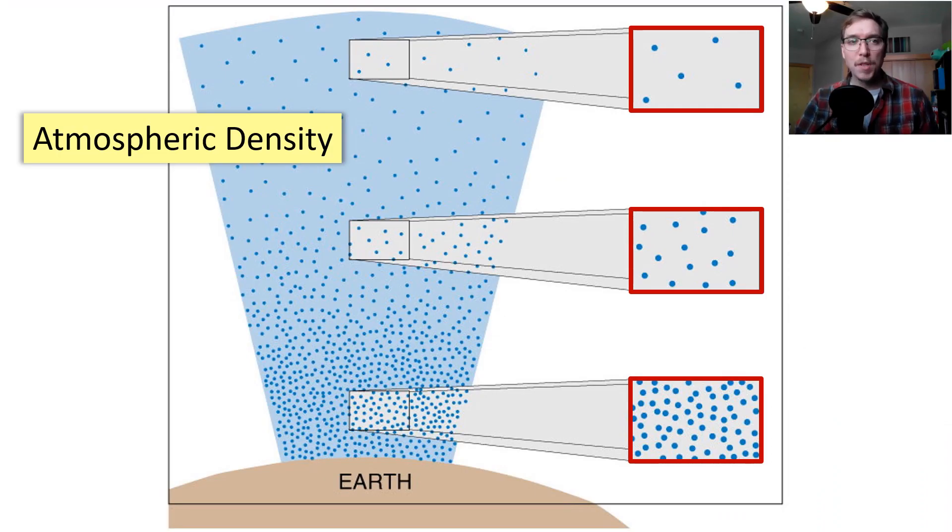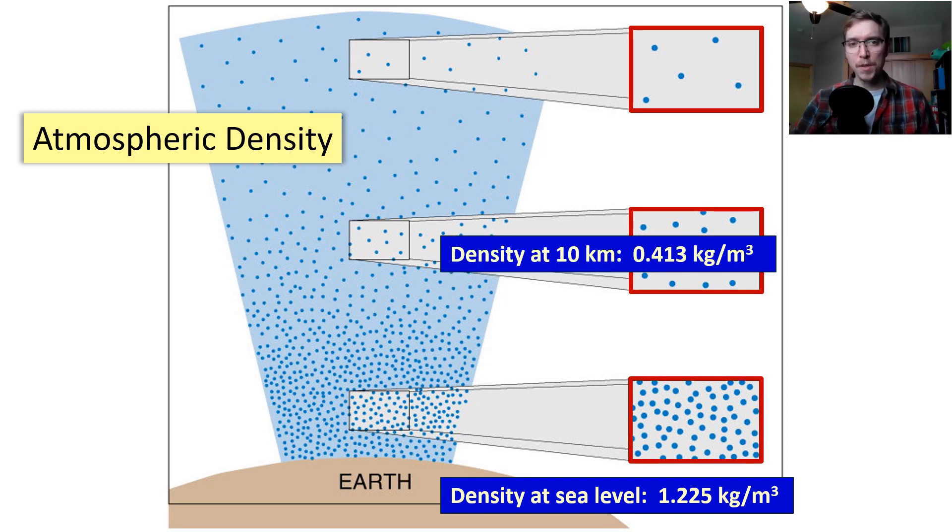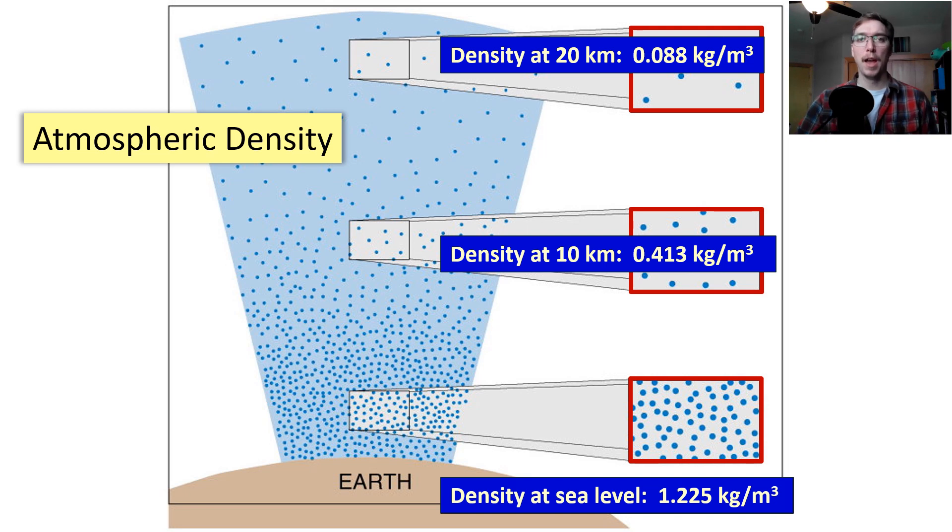So moving into atmospheric density, density decreases with height as I just mentioned. If we look at density at sea level, it is about 1.225 kilograms per meter cubed. You go up a little bit, and density at 10 kilometers in altitude is about 0.413 kilograms per meter cubed. And density at 20 kilometers is only 0.088 kilograms per meter cubed. So that gives you an idea of how density changes, but we need to understand some of the relationships there. So one of the ways we do that...